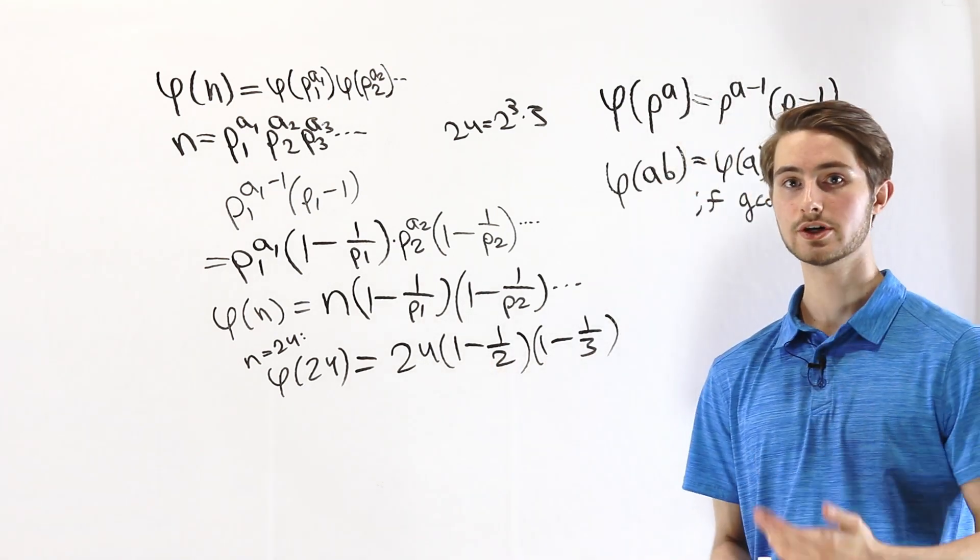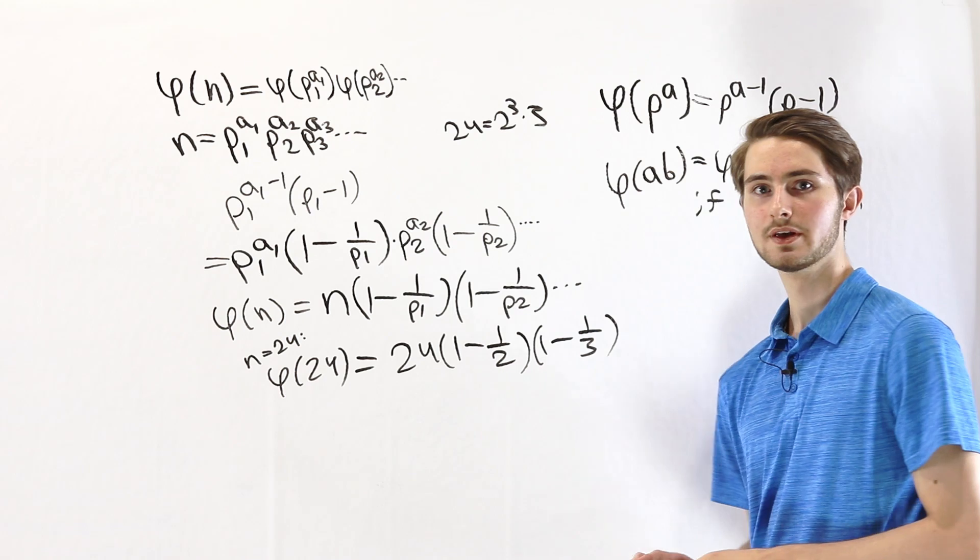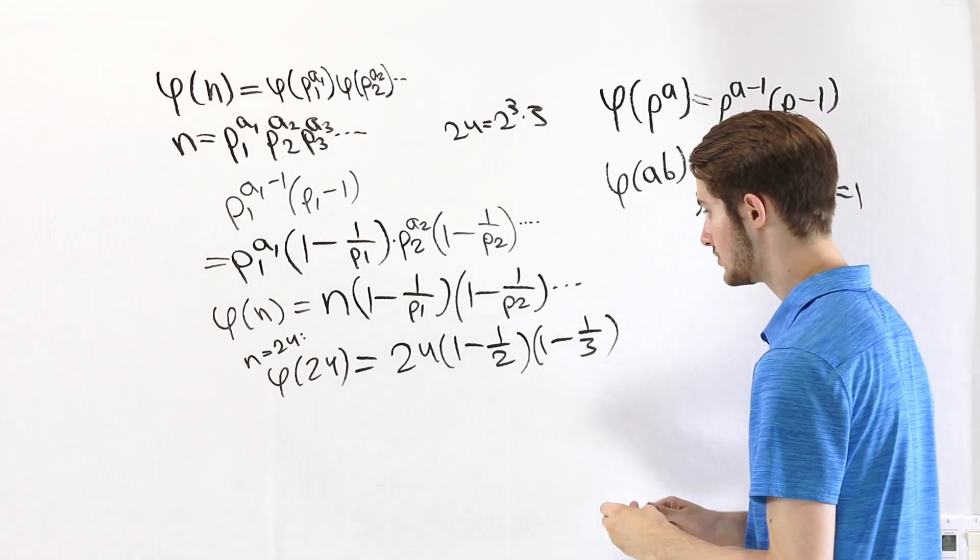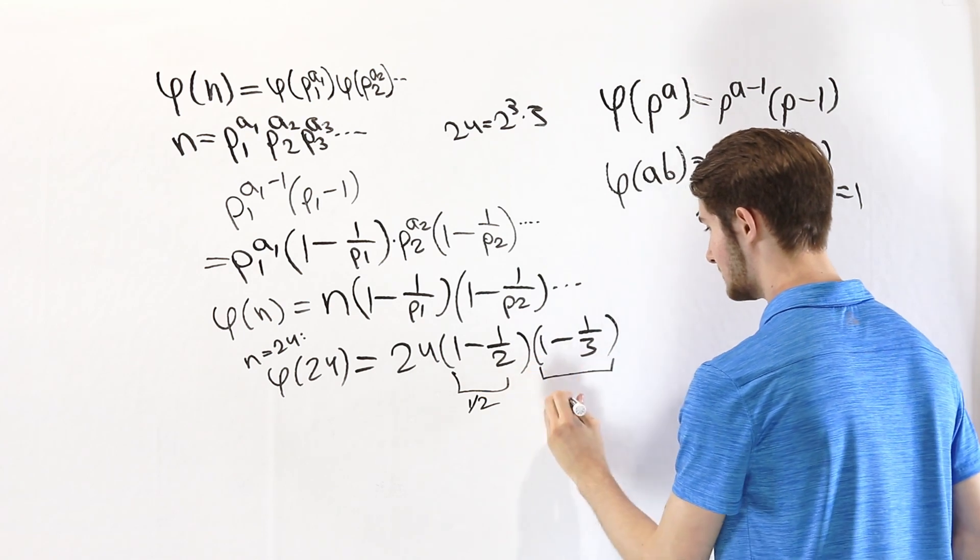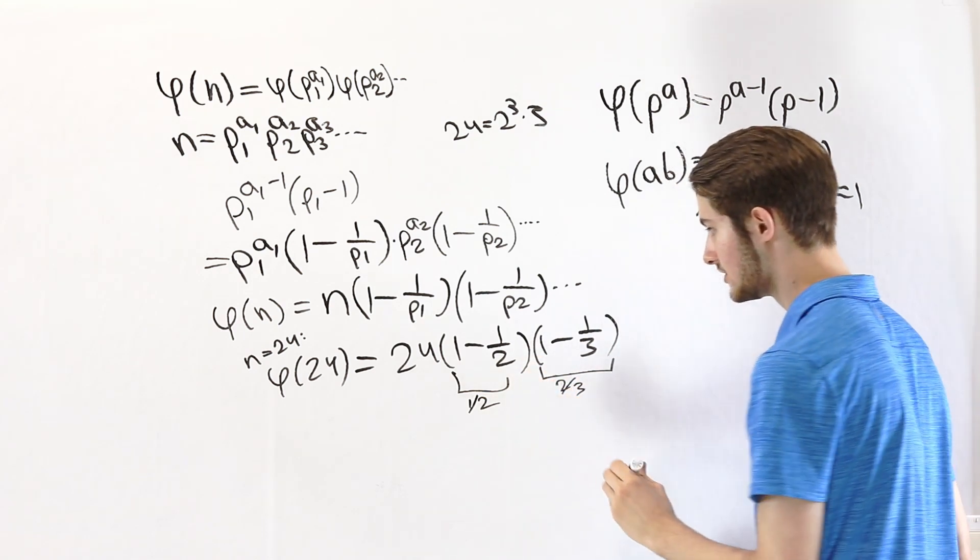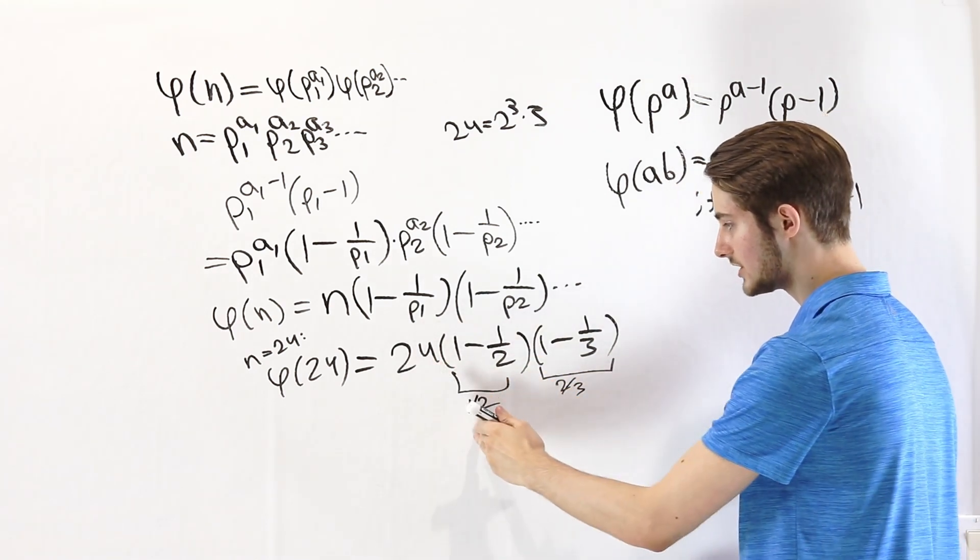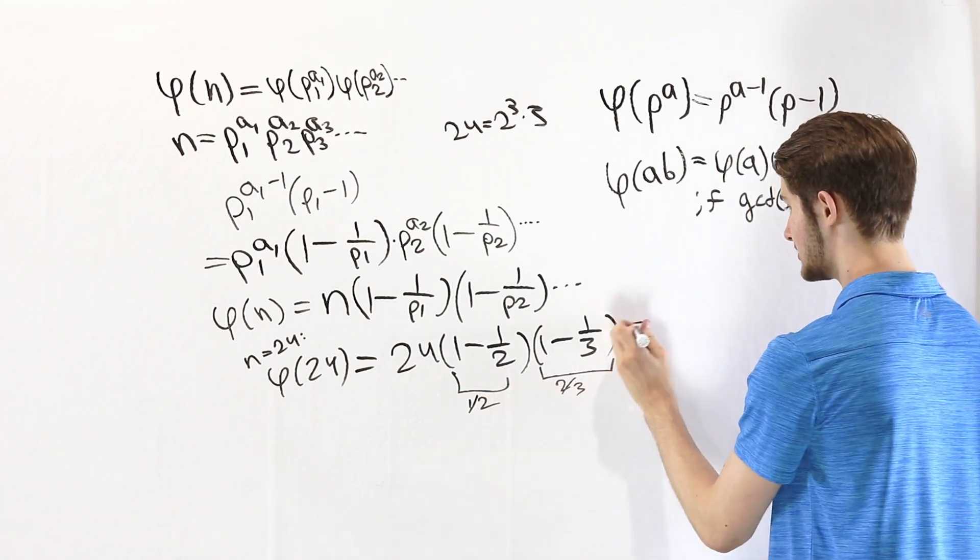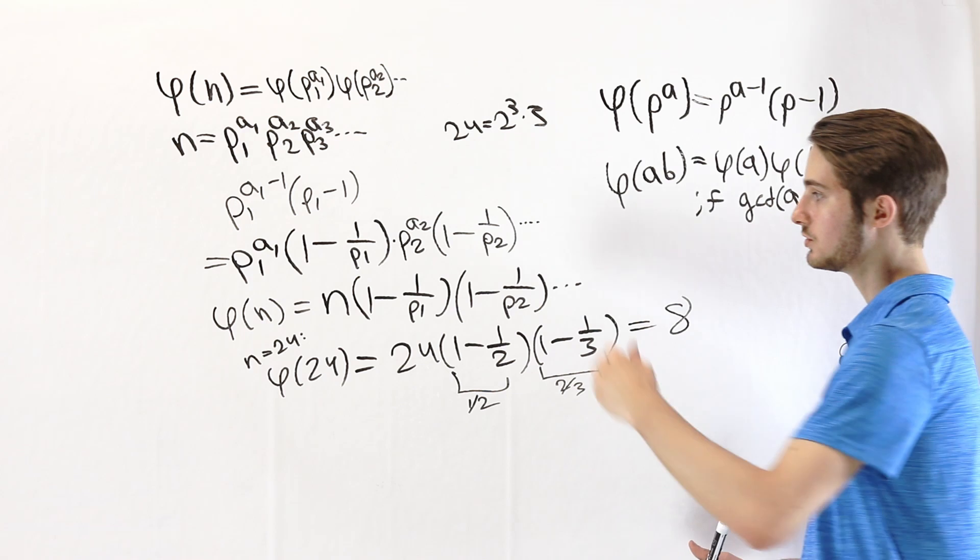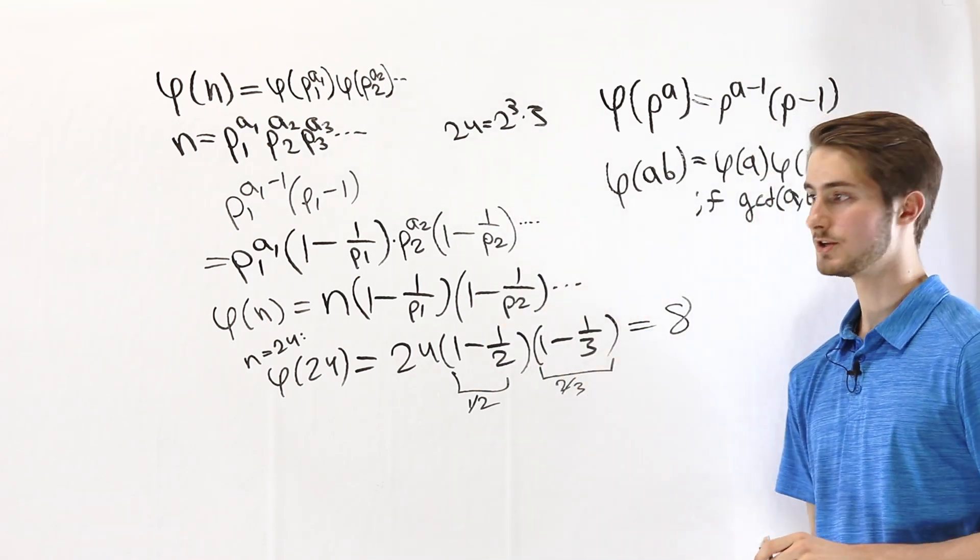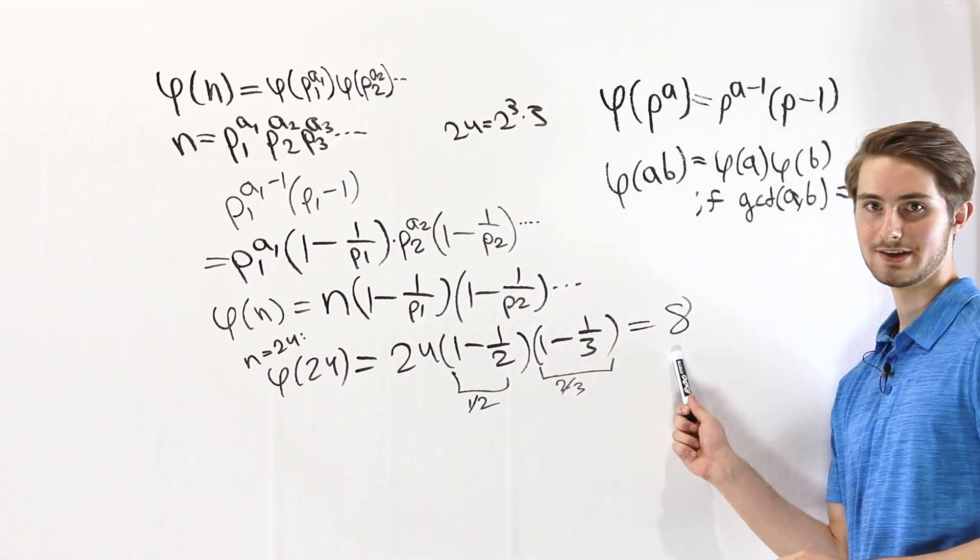And if we do this out, this first part here is going to be 1 half. This second part is going to be 2 thirds. And when we do 24 times 1 half times 2 thirds, we get 8. So the number of integers between 1 and 24 that are relatively prime to 24 is 8.